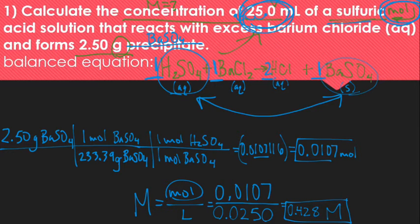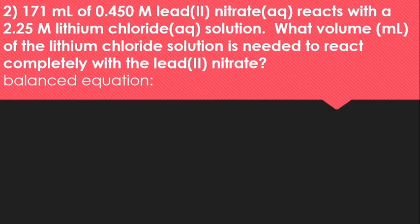So, a little bit long, but the dimensional analysis and stoichiometry part is the same. It's just kind of figuring out how to use the information that you've got to the best effect. So let's work another one. Okay. So in this problem, it tells me that I have 171 milliliters of this molarity of lead nitrate. So I'm just going to start writing this stuff out as we get it. Lead 2 nitrate is going to look like this, and that tells me it's aqueous, and it reacts with a certain concentration of lithium chloride aqueous solution. What volume of the lithium chloride solution is needed to react completely with the lead nitrate solution?